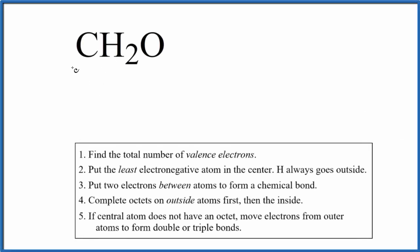Let's draw the Lewis structure for CH2O. This is formaldehyde. With the Lewis structure for formaldehyde, first thing we do, count the total number of valence electrons.